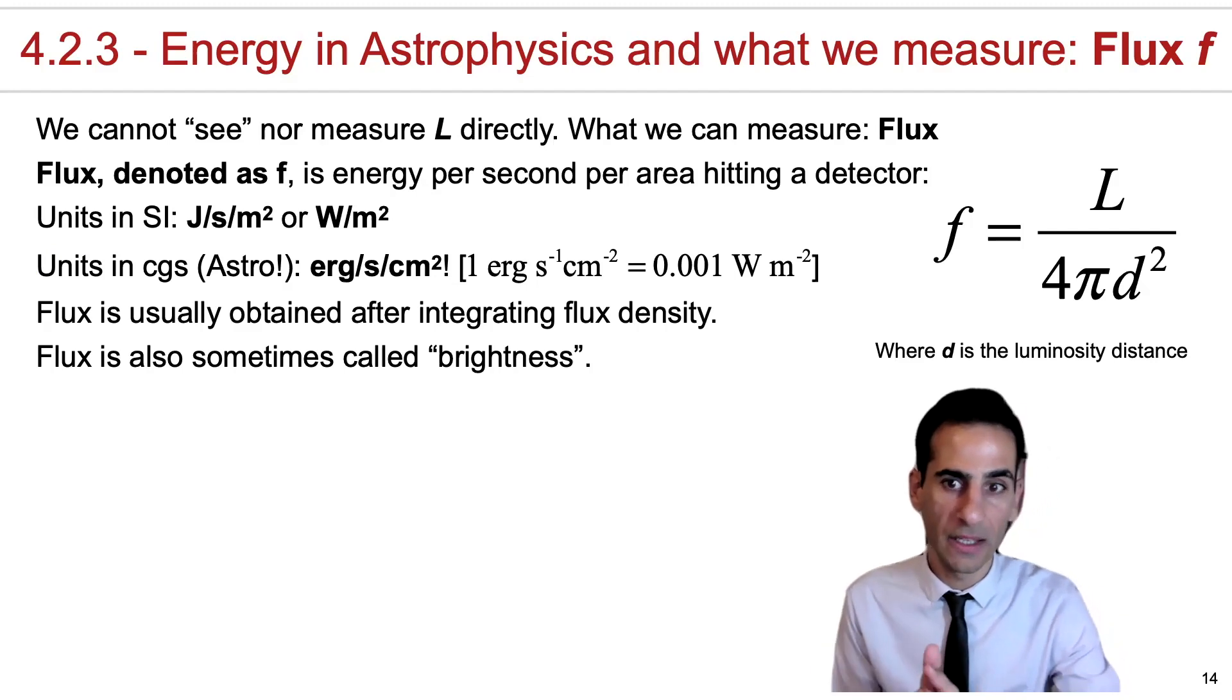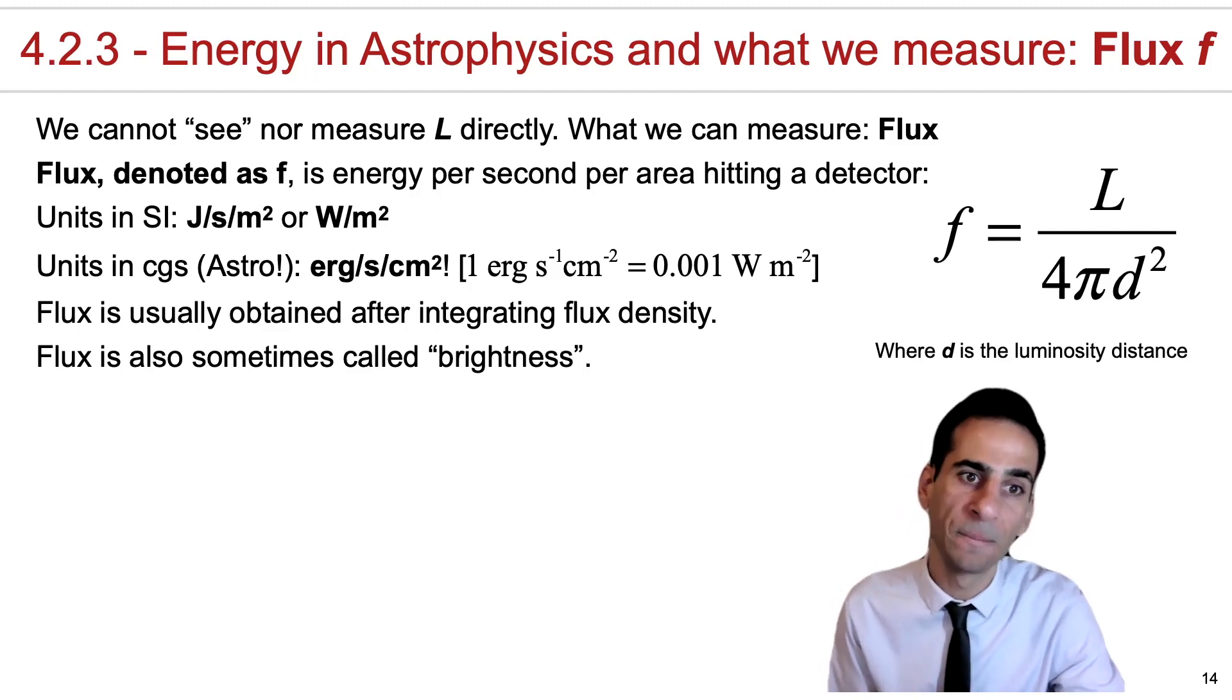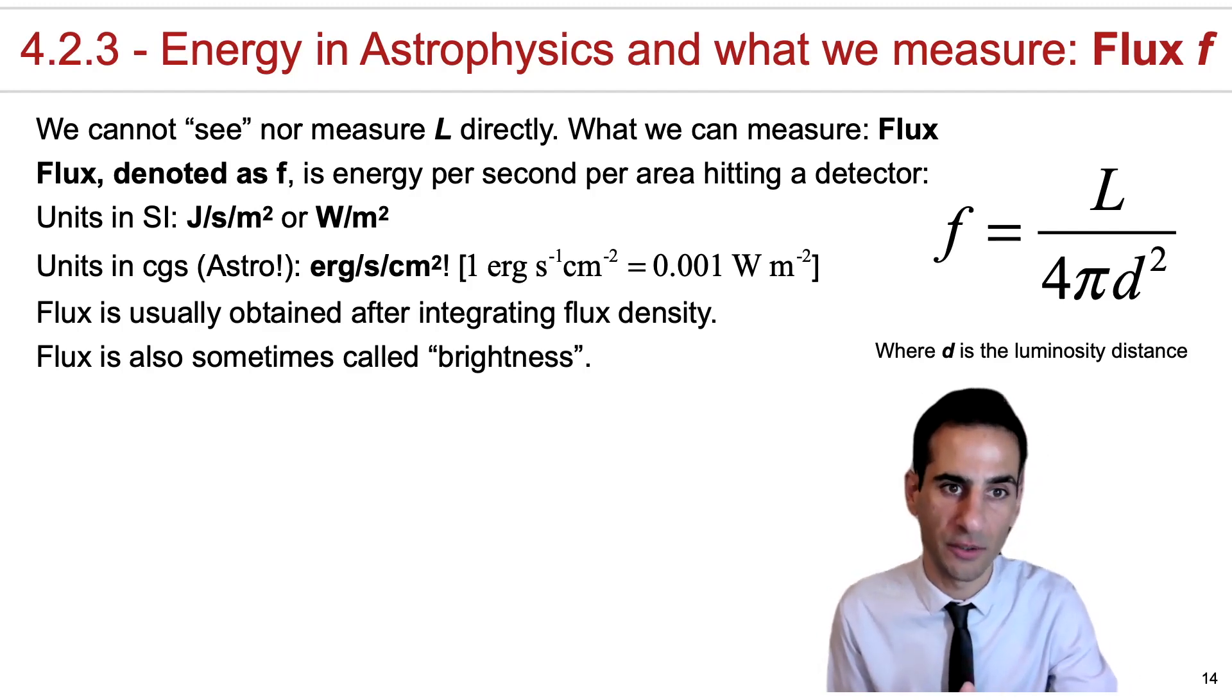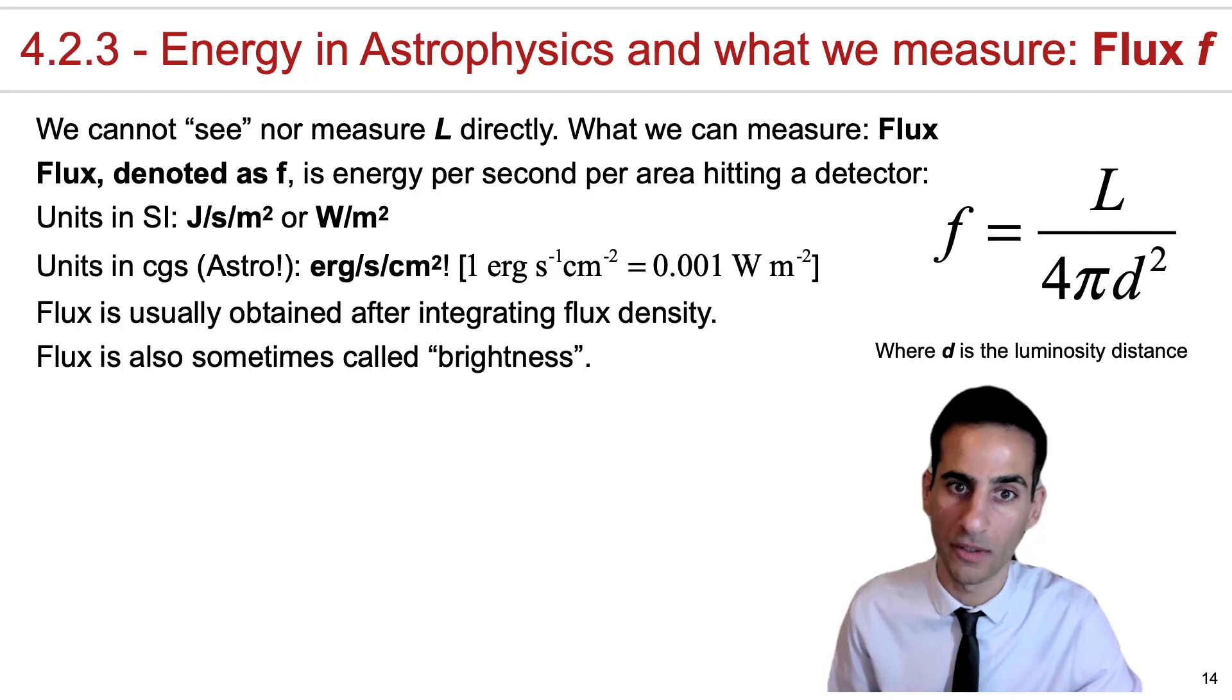In the international system, these logical units will be joule per second per meter squared, or just watt per meter squared. In cgs, we're looking at units of erg per second per centimeter squared, and you also have a conversion: one erg per second per centimeter squared is 0.001 watt per meter squared.